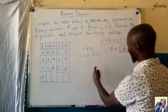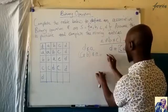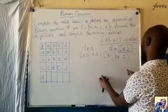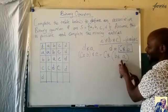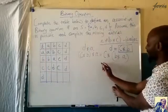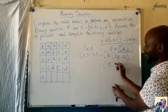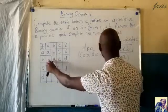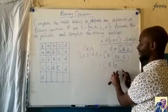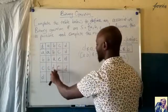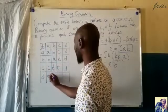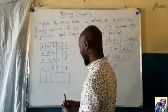Since this is associative, I can group this as C operate (B operate A). Do I know B operate A? B operate A is B. So I replace B operate A with B, giving C operate B. Now C operate B gives D. So we are going to have D here. What we are doing is trying to eliminate one of these two by replacing it with its equivalent — D is the same as C operate B.